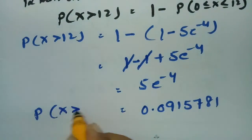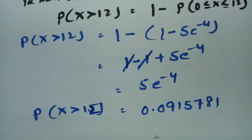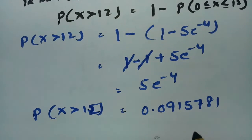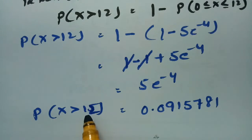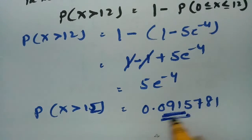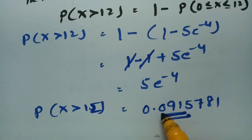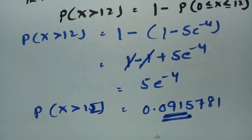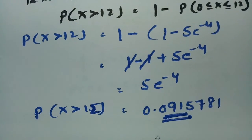Therefore, given the probability density function f(x) = (1/9)·x·e^(-x/3), the probability that there is a power cut on any given day — i.e., when power consumption exceeds 12 million kilowatt hours — is 5e^(-4) ≈ 0.0915781. Please go through this video one more time. Thank you so much.